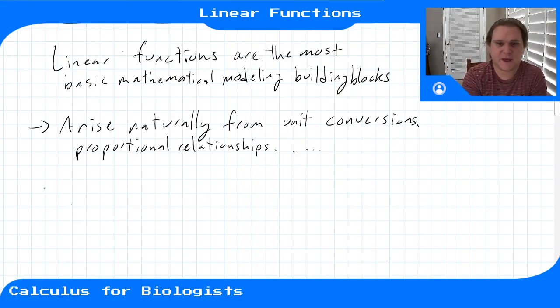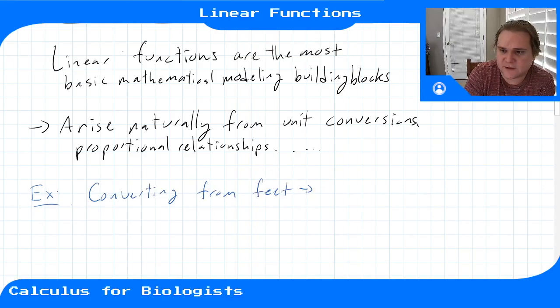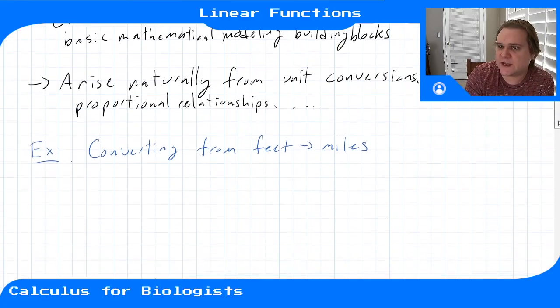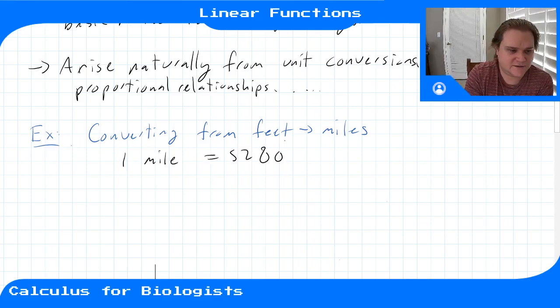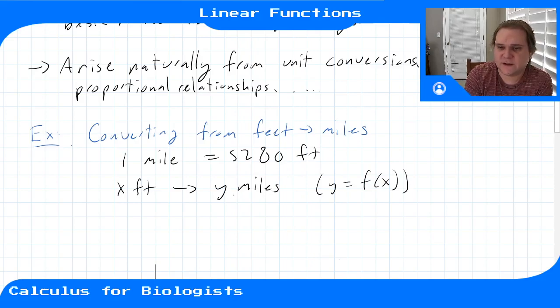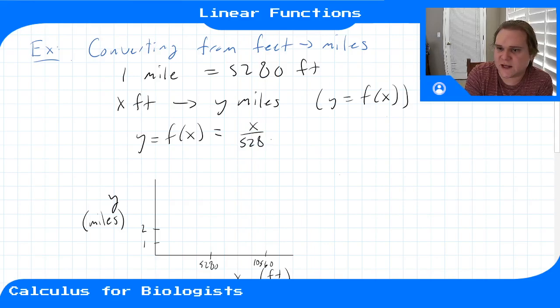These arise pretty naturally from unit conversions, proportionality relationships, and other places. So let's start with an example - converting between units with the same dimension and same zero, like converting from feet to miles. We have one mile equals 5280 feet. If we build a function that takes x feet and gives us y miles, where y is some function of x, we'll get y = f(x) = x/5280.